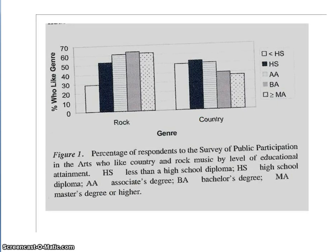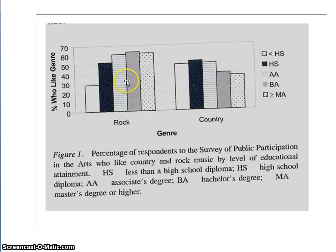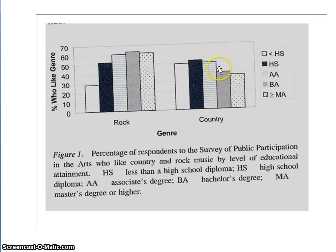Some researchers looked at how different genres of music may capture some of these differences in individualism — soft versus hard — by examining how rock music and country music are embraced by different educational groups. As educational attainment goes up, a greater percentage of people like rock. For country, the trend is the opposite: lower-educated groups show the greatest liking for country, and the more education you get, the less likely you are to favor country music.